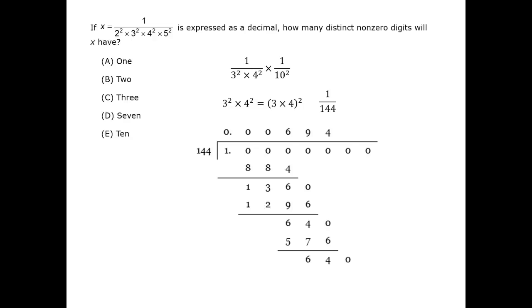From here on out, we'll have 4's. Therefore, the distinct non-zero digits in this decimal are 6, 9, and 4, for a grand total of 3. The correct answer is C.